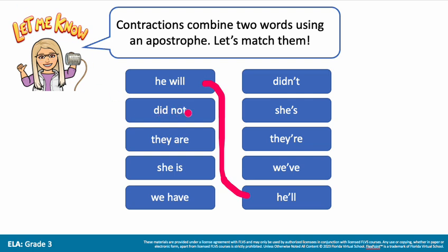'Did not' becomes 'didn't.' I see that 'didn't' has the word 'did.' 'Not' is simply missing the O, and the apostrophe goes in between the N and the T. Let's take a look at another.